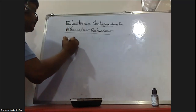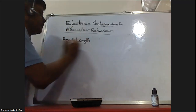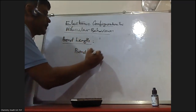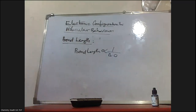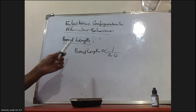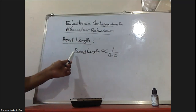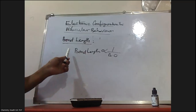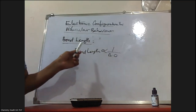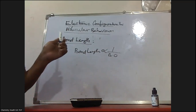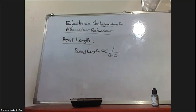Next one is bond length. Bond order and bond length are related. Bond length is inversely proportional to bond order. The bond order between two atoms in a molecule is taken as the approximate measure of the bond length. Higher the bond order, lower the bond length. Lower the bond order, higher will be the bond length. So, bond length is inversely proportional to the bond order.